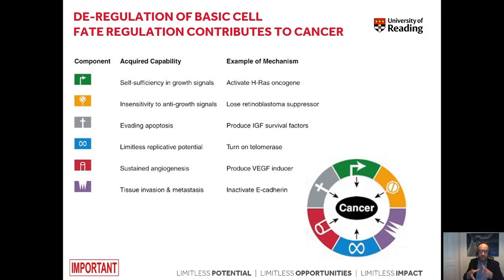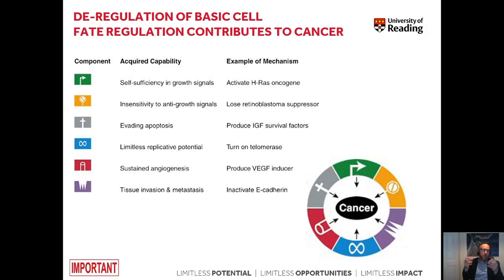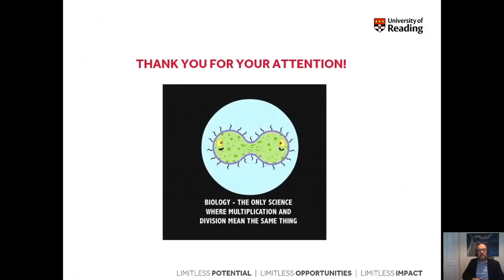As you can see, cell fate needs to be tightly controlled in all of our cell types. Deregulation of cell fate or certain signal transduction pathways involved in those processes can lead to development of cancer. Importantly, signal transduction cascades and receptors involved in all of those processes are quite important drug targets, especially when it comes to regulation of proliferation. Indeed, many pharmaceutical compounds are targeting those processes, especially in cancer treatment. With this, I would like to end our session on cell fate — thank you very much for your attention.